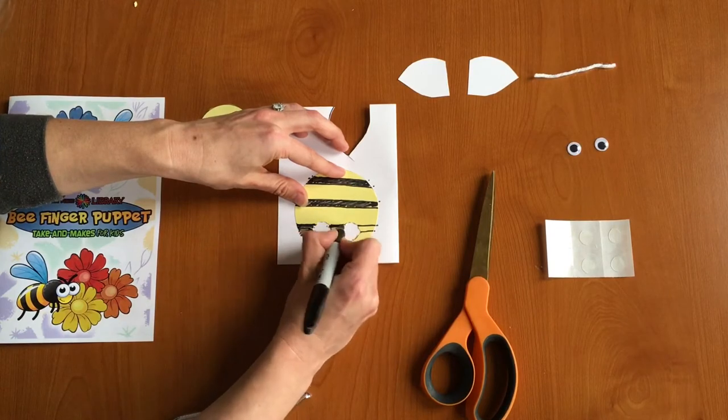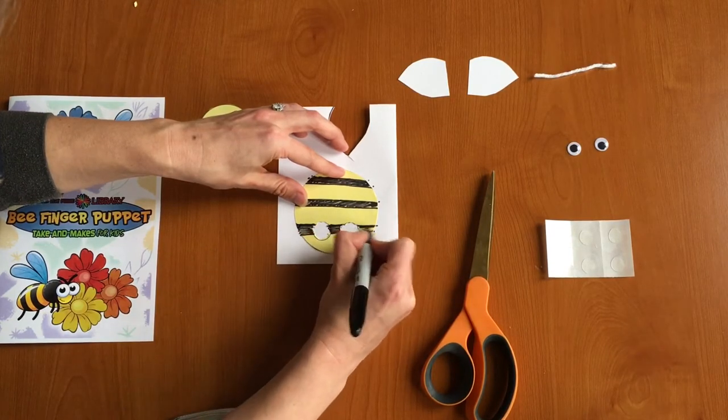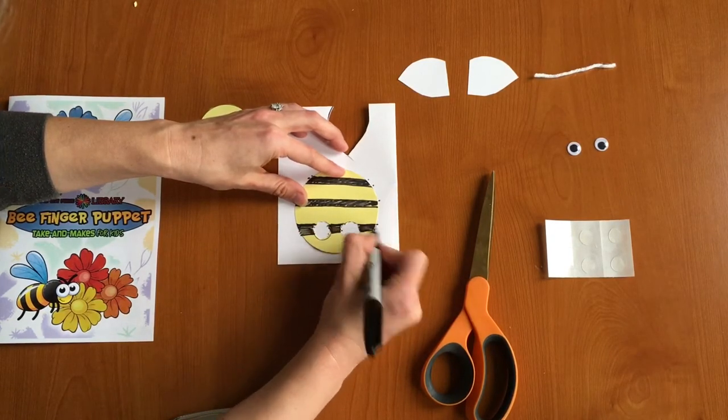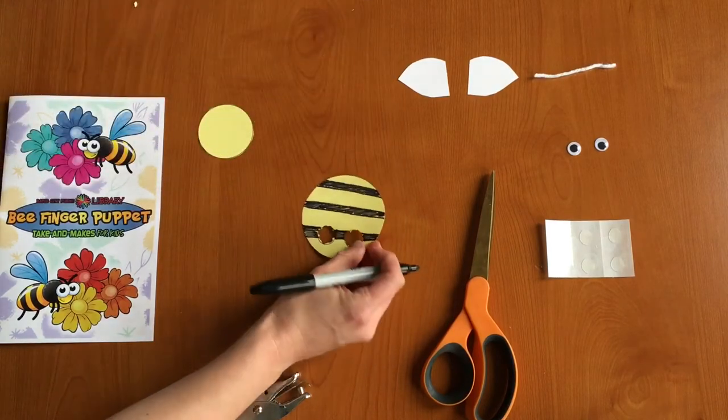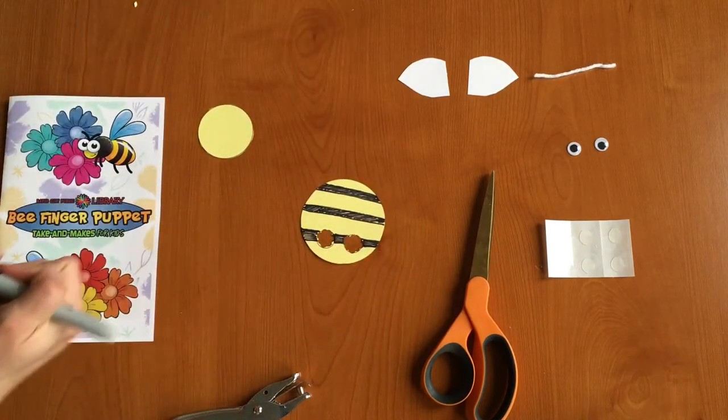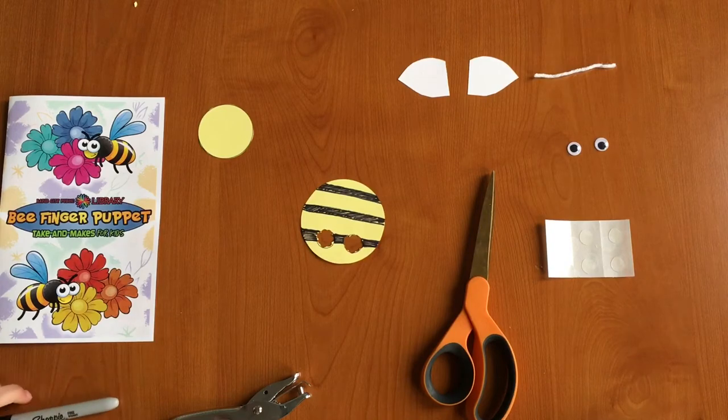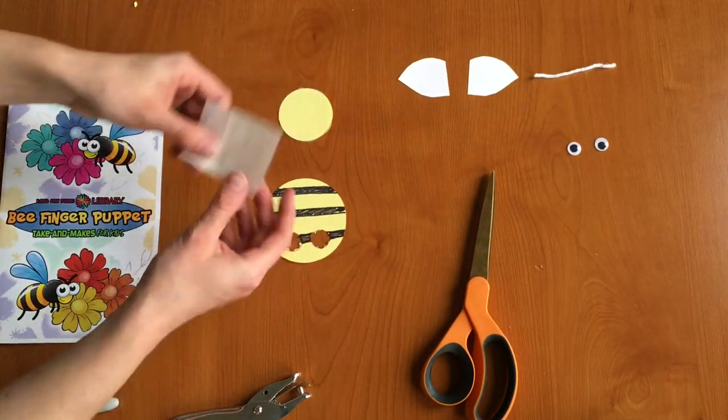So we'll just finish coloring these in. All right and now I have my stripes on my bee's body.